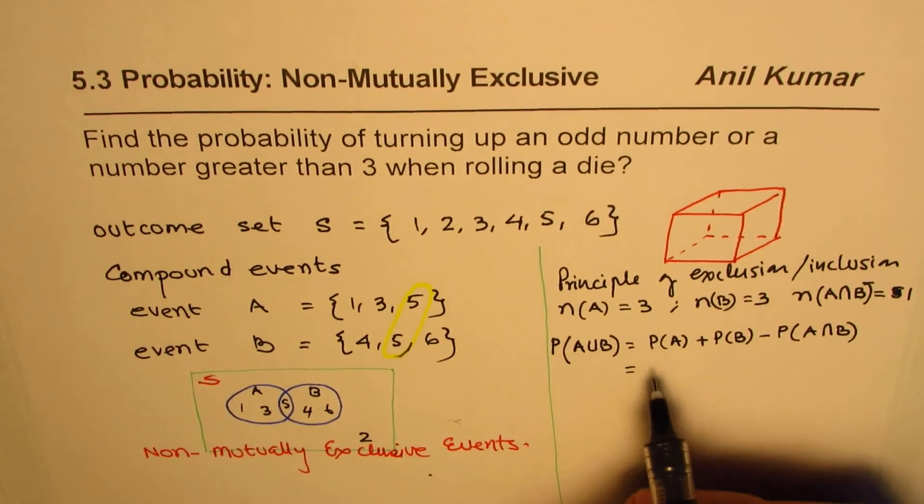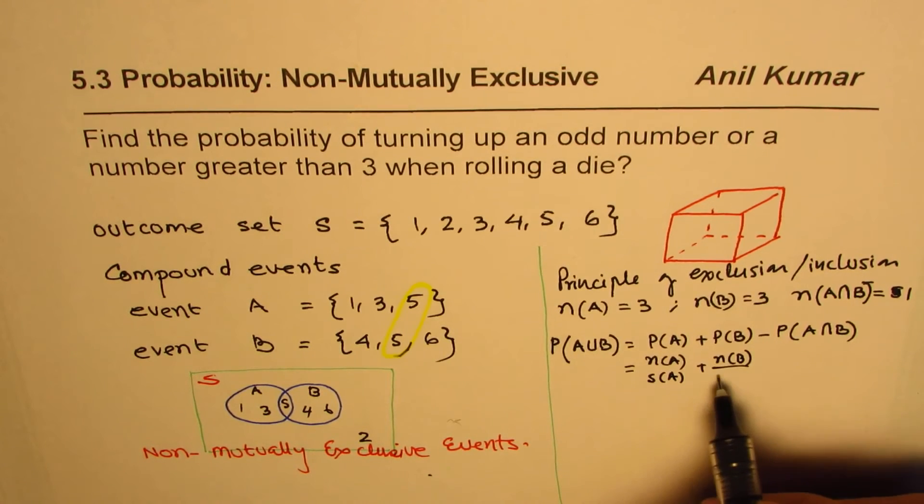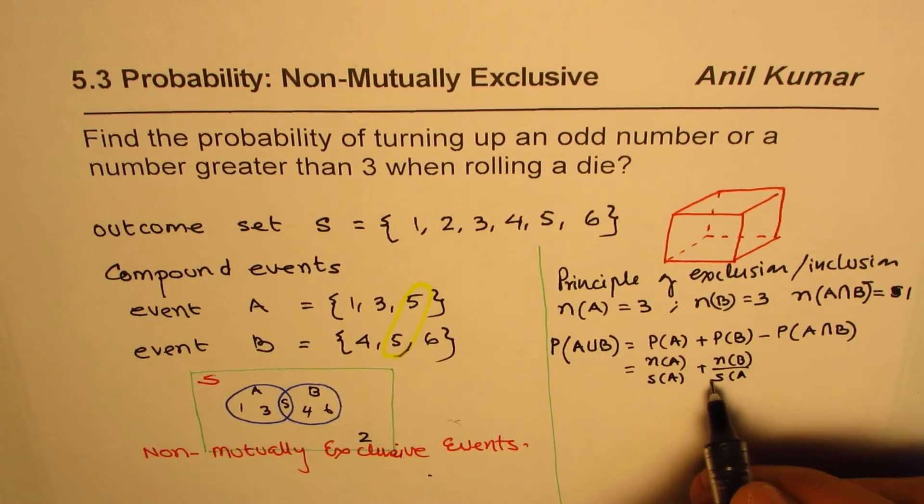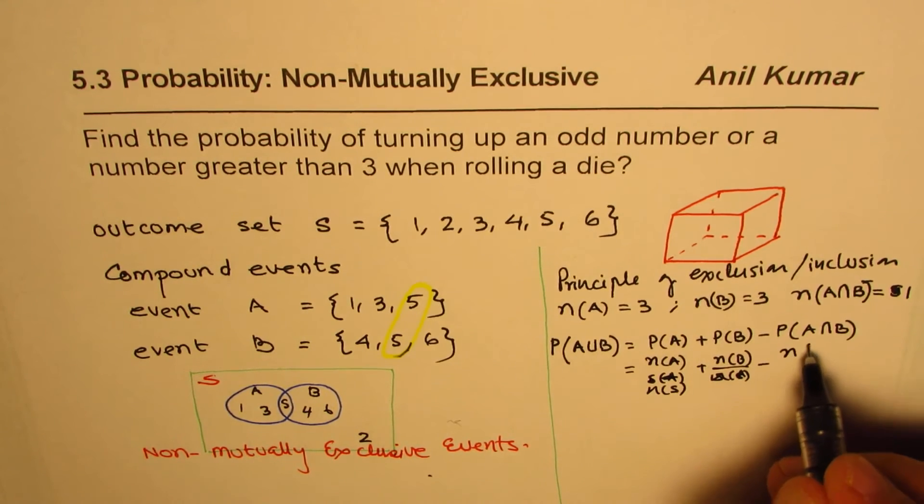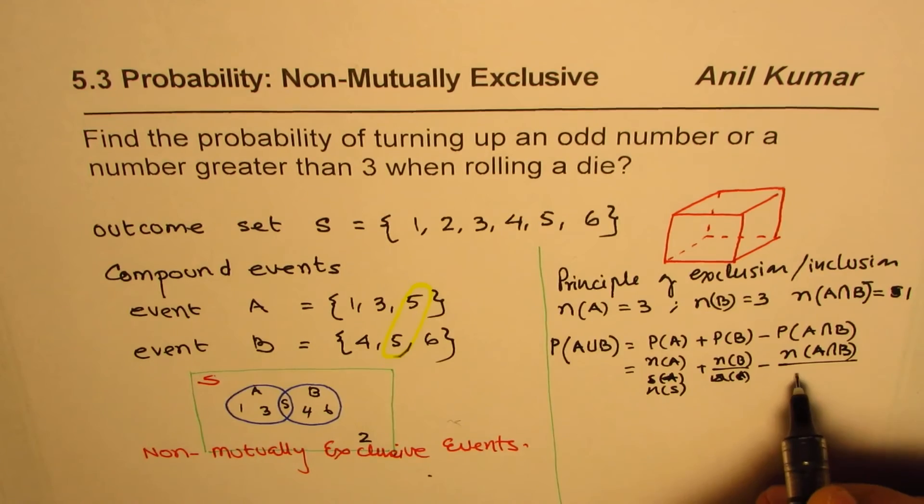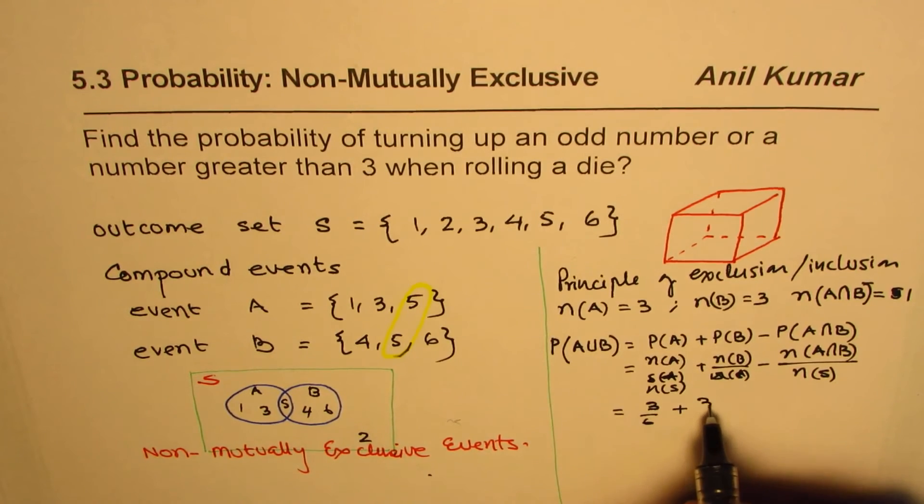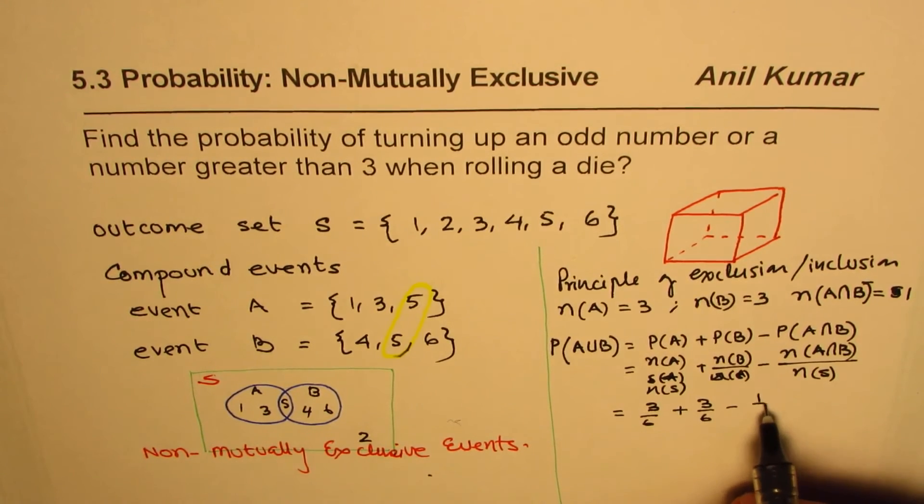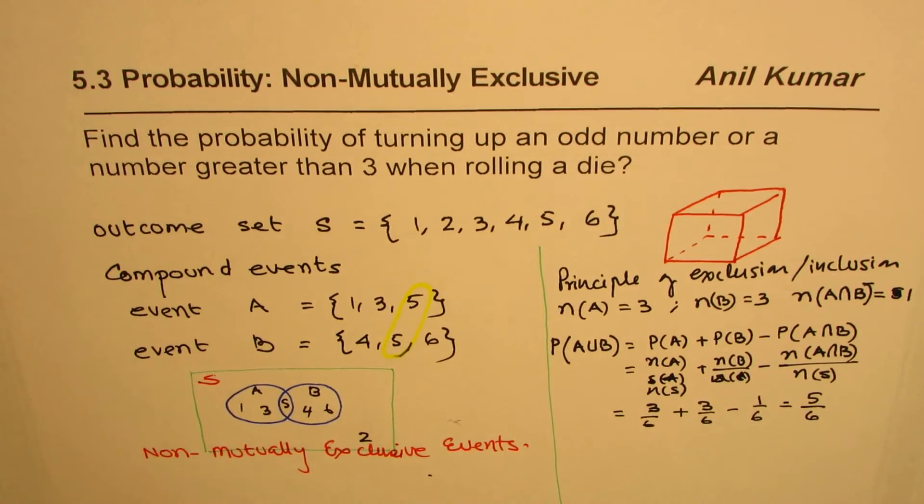So that is to say, N of A over N of S plus number of elements in B over sample space, right? I mean, I should write N S, I'm sorry, N S, okay, minus N of A intersection B over N of the sample space. So that is to say, 3 over 6 plus 3 over 6 take away 1 over 6, right? So that gives us 3 plus 3 is 6, minus 1. So we have 5 over 6 as our result, right?